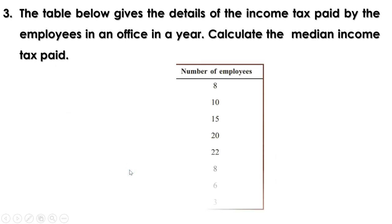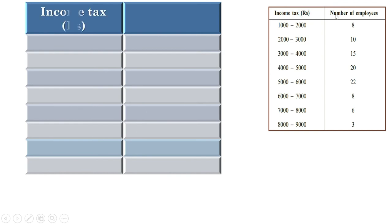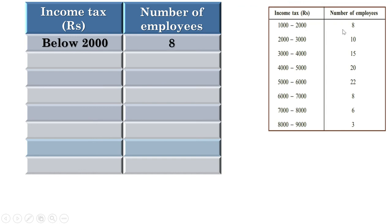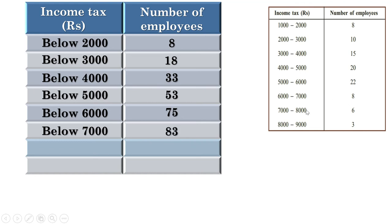Third problem: the table below gives the details of the income tax paid by employees in an office in a year. Calculate the median income tax paid. Cumulative frequency table — headings income tax and number of employees: below 2000 there are 8; below 3000 there are 18; below 4000 there are 33; below 5000 there are 53; below 6000 there are 75; below 7000 there are 83; below 8000 there are 89; below 9000 there are 92 employees. Total is an even number, so there are 2 employees at the middle — the 46th and 47th.